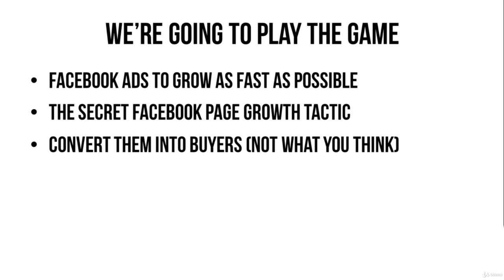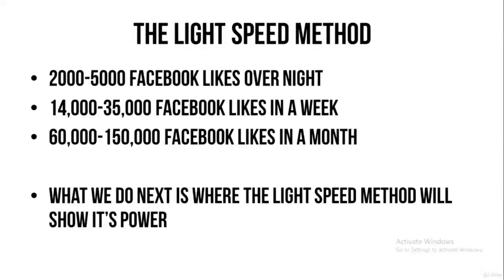We're going to use money and play the game the way Facebook wants us to play it. Basically, we're going to use Facebook ads to grow as fast as possible. I'm going to show you the secret Facebook page growth tactic — I call it the Lightspeed Method. We're going to convert people who have liked our page into buyers, but not the way you probably think. The Lightspeed Method can bring you 2,000 to 5,000 Facebook likes overnight, 14,000 to 35,000 in a week, and 60,000 to 150,000 in a month.